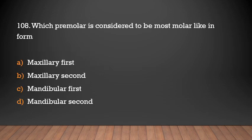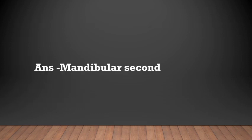Which premolar is considered to be most molar-like in form? Options: maxillary first, maxillary second, mandibular first, mandibular second. Answer: Mandibular second.